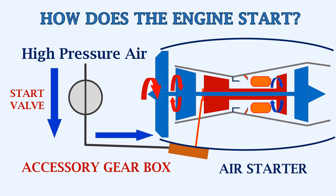At a certain N2 speed, the ignition is cut off, since the flame becomes self-sustaining. As the N2 speed increases further, the shaft from the air starter unit disengages from the N2 shaft. Now the start valve can be closed, since high pressure air is no longer required in the air starter unit.